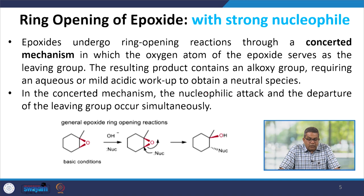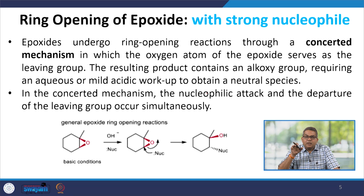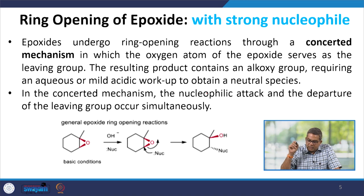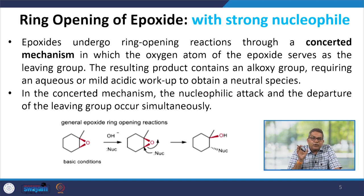Let us talk about the ring opening of epoxides with strong nucleophiles. The epoxide undergoes the ring opening reaction through a concerted mechanism in which the oxygen atom of the epoxide serves as a leaving group, and the resulting product contains the alkoxy group. This requires an aqueous or mild acidic workup to obtain a neutral species. In the concerted mechanism, the nucleophilic attack and the departure of the leaving group occur simultaneously.